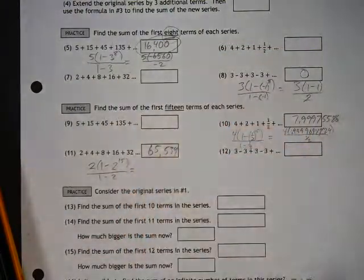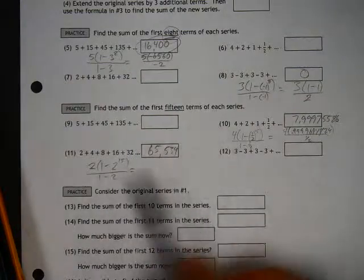65,534. So that is the sum of the first 15 terms in that series.